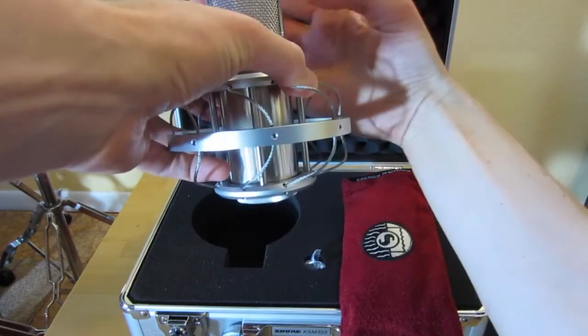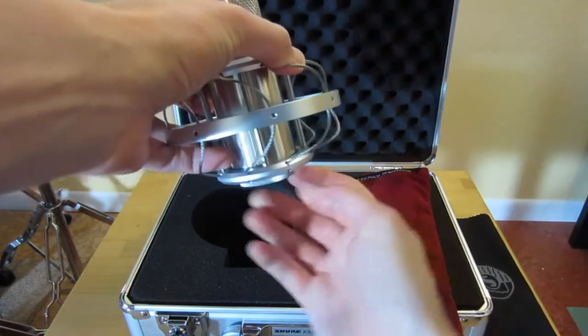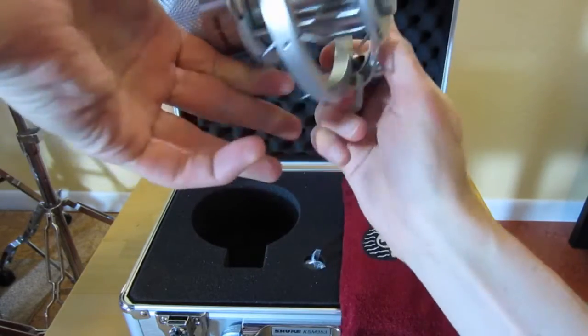Adjusting the rotation of the mic is actually really easy. Loosen the bottom nut a little bit, spin it, and it tightens right back down.